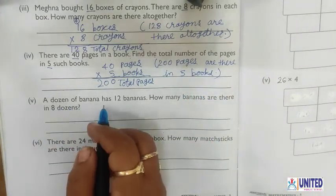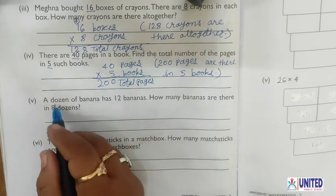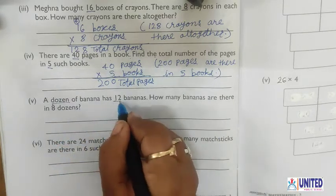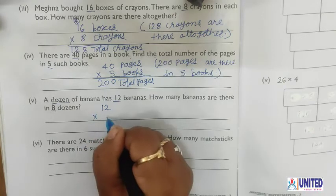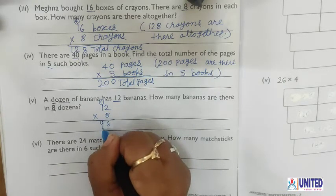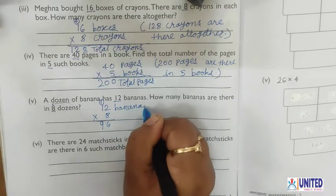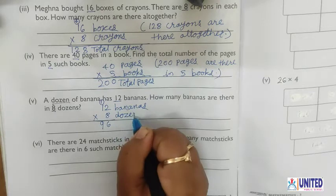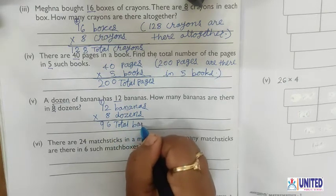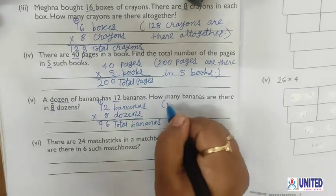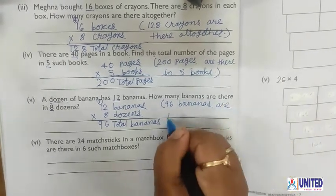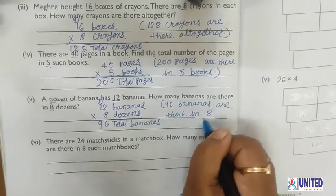Number 5: A dozen of bananas has 12 bananas. How many bananas are there in 8 dozens? Multiply 12×8. 8×2=16, carry 1. 8×1=8 plus 1=9. So 12 is bananas, 8 is dozens, and 96 is the total bananas. Therefore, 96 bananas are there in 8 dozens.